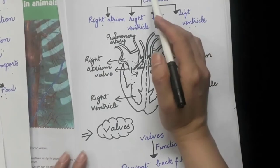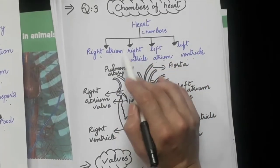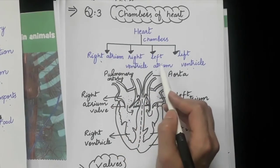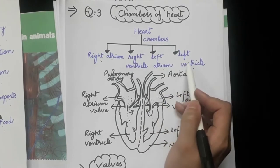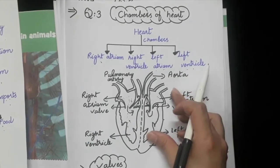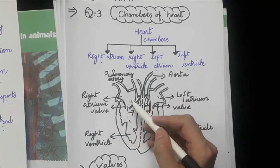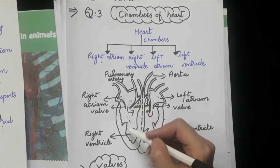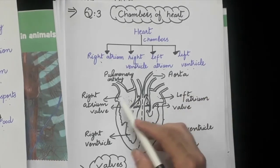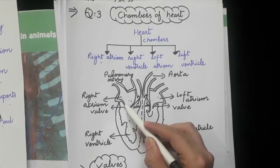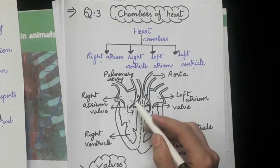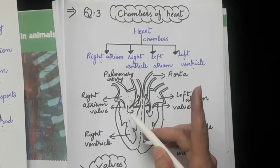You must know that the heart consists of four chambers: first, the right atrium; second, the right ventricle; third, the left atrium; and fourth, the left ventricle. In the diagram of the internal structure of the heart, you can see here is the right atrium, right ventricle, left atrium, and left ventricle. You can also see flaps between these chambers.